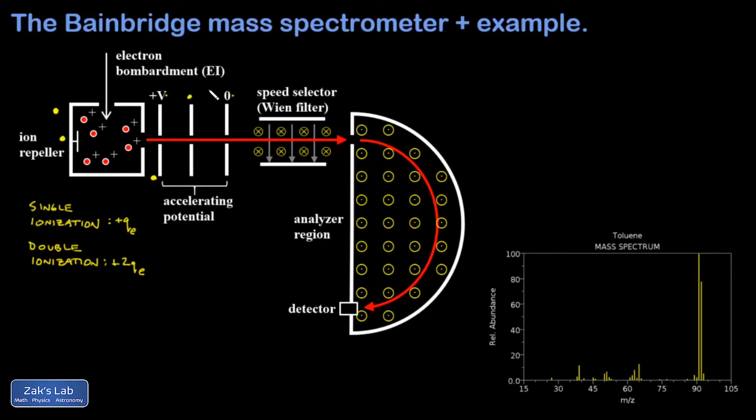Ions crashing into the plates will pick up an electron and be neutralized, and those will eventually be pumped out of the spectrometer by the vacuum pumps to keep the interior evacuated. Finally, the ions leave the ground plate, and we have a narrow beam of high velocity ions headed into the next stage.